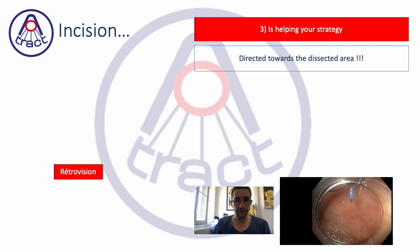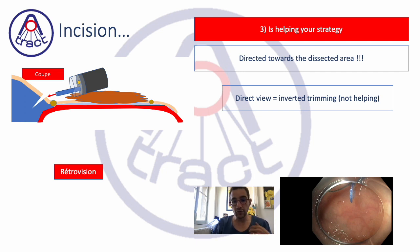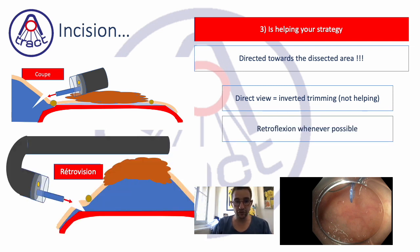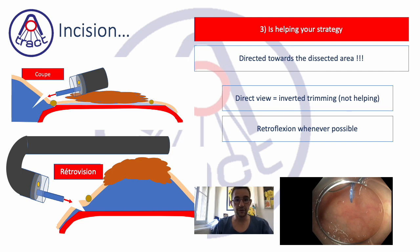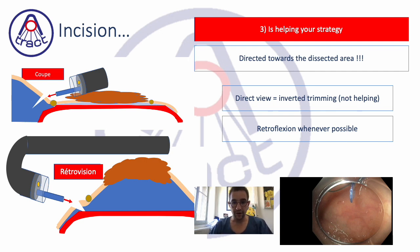The second point: you should do your incision, if possible, in retroflexion for the oral part in the colorectum. Why? Because if you do it in a direct forward position, you are doing an incision and trimming in the opposite direction of the lesion — so you don't begin the dissection. If you do it with retroflexion, you will cut and do your trimming towards the lesion, so the trimming is effective and useful. Here we have a small example of a lesion...